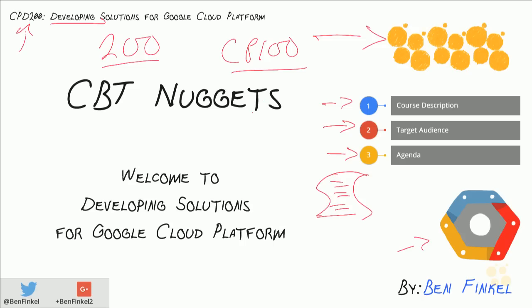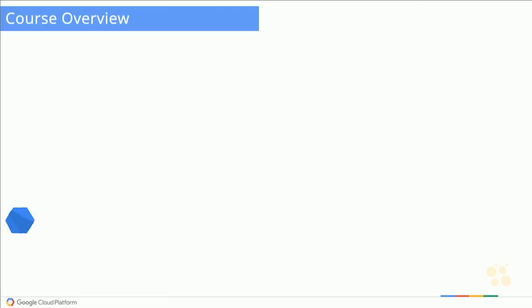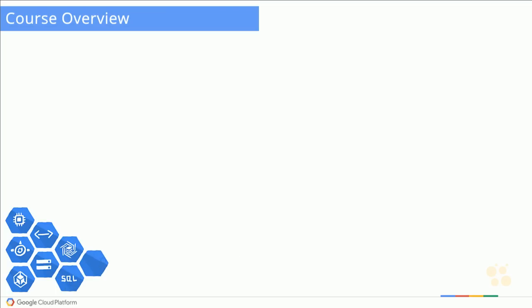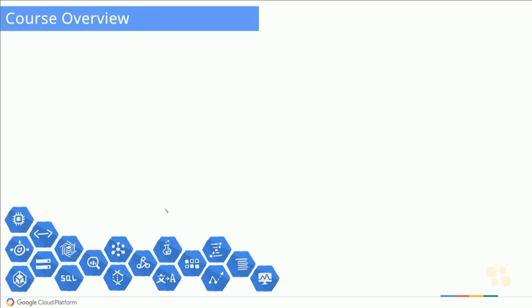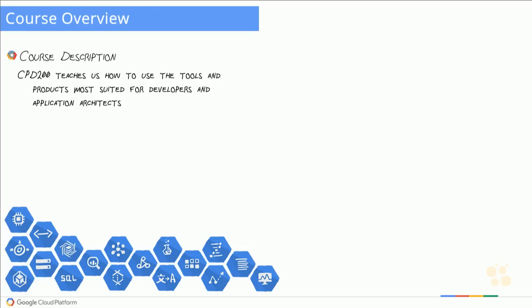Let's start with a course overview. As you should already know, Google Cloud Platform is made up of a lot of different products, utilities, and services you can use to deploy solutions — big data utilities, monitoring and logging utilities, and compute utilities. CPD 200 is all about developing applications, and it will teach us how to use the tools and products inside the suite that are most suited for application developers and architects.